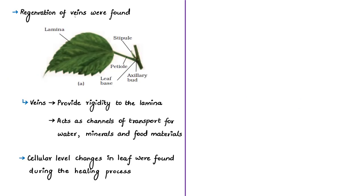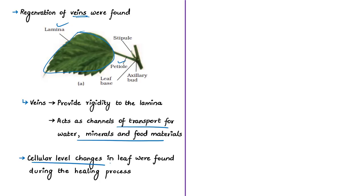It was also found that the injury healed not just at the surface level but also in the veins, because veins were also regenerated. A leaf consists of three main parts: leaf base, petiole, and lamina. The lamina, also called the leaf blade, is the green expanded part of the leaf which has veins and veinlets. Veins provide rigidity to the lamina and act as channels for transport of water, minerals, and food materials. The researchers also noticed functional restoration of tissue cells at the cellular level.